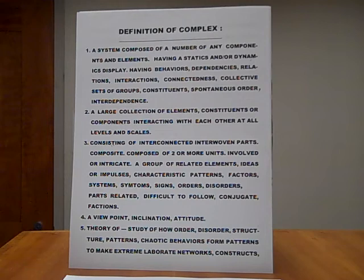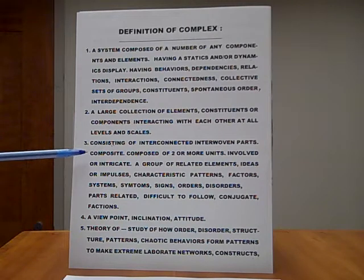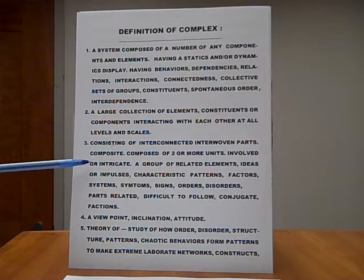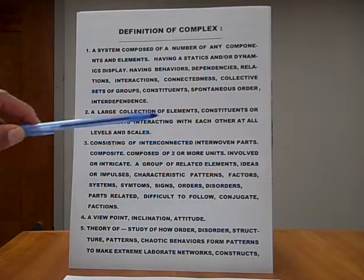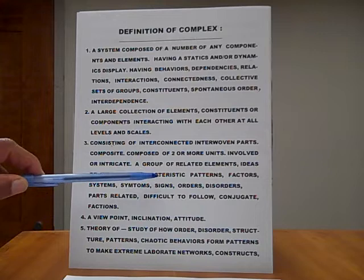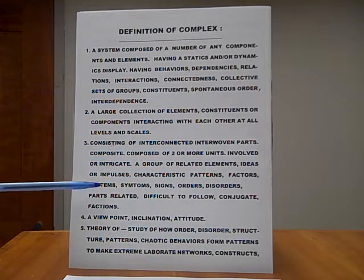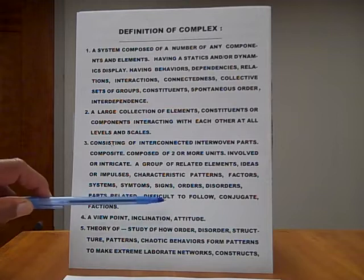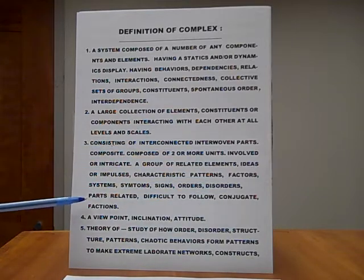Number 3. Consisting of Interconnected and Interwoven Parts. Composite. Composed of two or more units, involved or intricate. A group of related elements, ideas or impulses, characteristic patterns, factors, systems, symptoms, signs, orders, and disorders. Parts related. Difficult to follow. Conjugate factions.